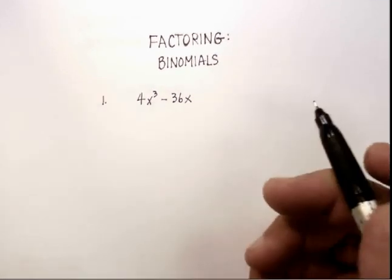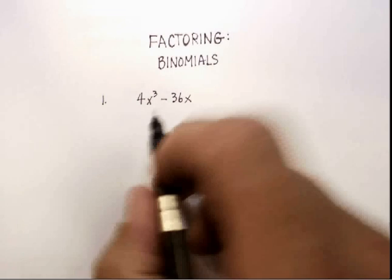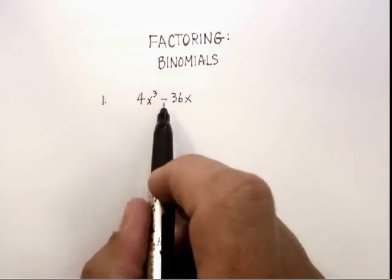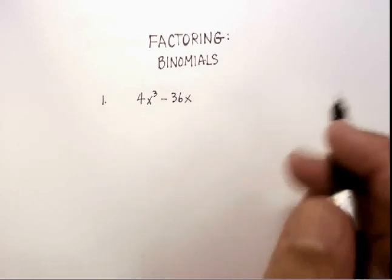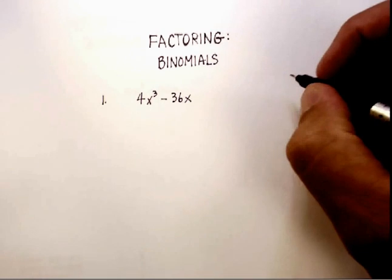When you have binomials—binomials mean that there's two terms that are separated either by an addition or subtraction—so binomials have two terms. There's only four ways to factor binomials.